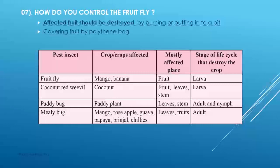What is the stage of the life cycle that destroys the crop? It is the larva stage. Regarding caddy barks — they harm paddy plants and the mostly affected parts are leaves and skin. Both adults and nymphs destroy the crops. Regarding mealy bugs — they affect mango, rose apple, guava, papaya, brinjal, and chilies.